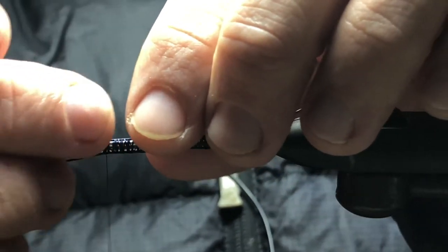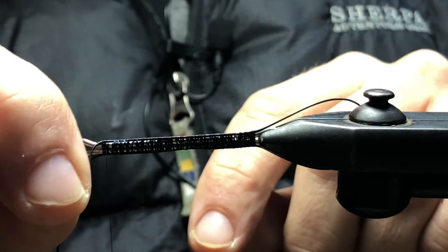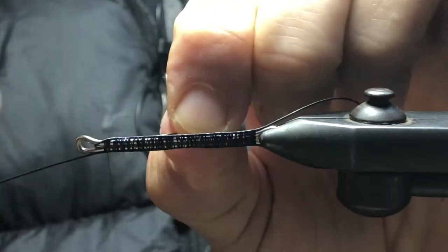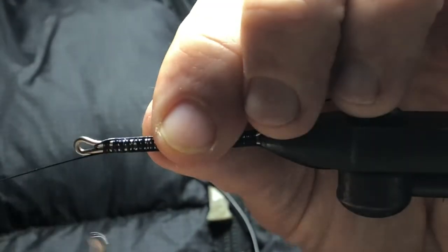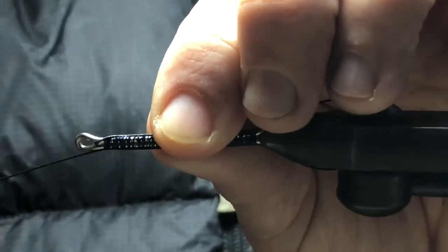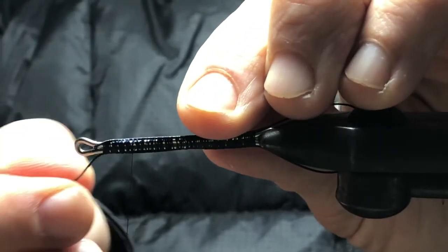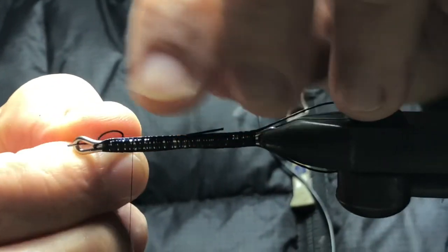You can stick this back through the actual hook eye and pull it back through. You see that? So that kind of doubly secures it. We'll stick this one through this way, pull it back.